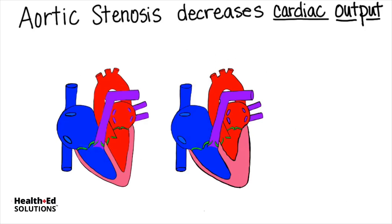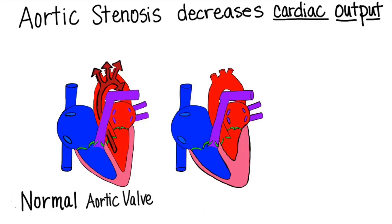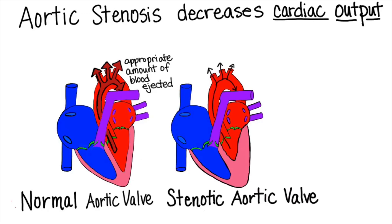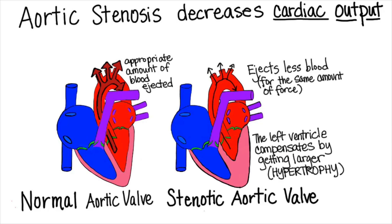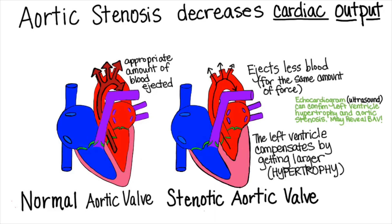Aortic stenosis decreases cardiac output. Here's that normal aortic valve — it opens smoothly to allow an appropriate amount of blood to be ejected. A stenotic aortic valve ejects less blood for the same amount of force. The left ventricle compensates by getting larger; this is called hypertrophy. An echocardiogram, which is an ultrasound of the heart, can confirm left ventricular hypertrophy and aortic stenosis. It may even reveal that the patient was born with a bicuspid aortic valve.